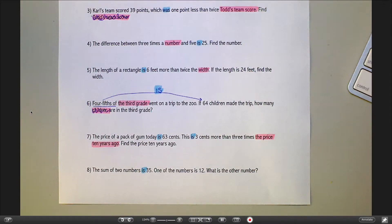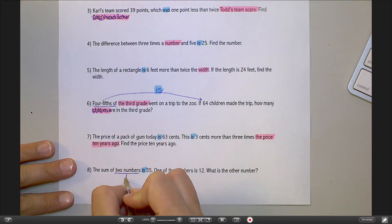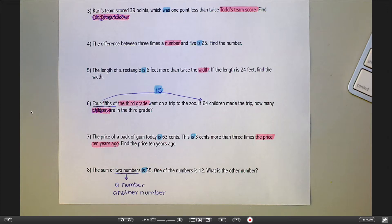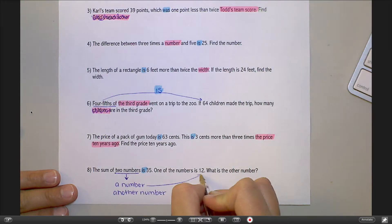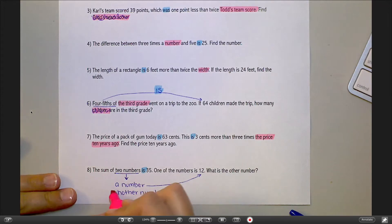And number 8, the sum of two numbers is 35. One of the numbers is 12. What is the other number? Now this one's a little bit tricky too in that it does not give you the phrase other number here in the problem. But here's what I want you to think about. It says the sum of two numbers. Well, my two numbers I could think of as a number and another number. It says one of my numbers is 12. So that is 12. My other number is my variable. The other number would be this one.